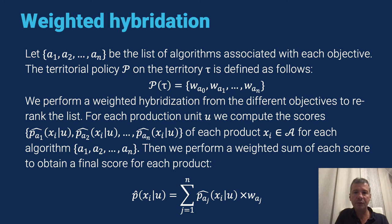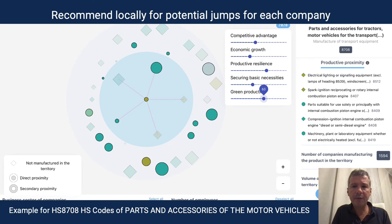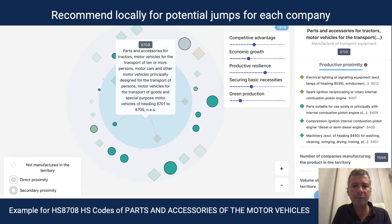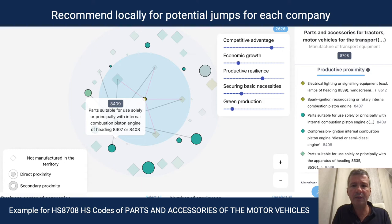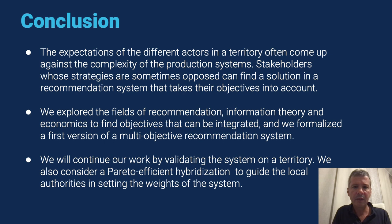We also promote environmentally friendly products using the ADEME list of ecological products. Our recommendation system weighs each objective before prioritizing the associated score, where weighting corresponds to the choice of territorial policy. We implemented an interface to weight objectives and dynamically visualize results — the center shows a product currently offered by the company, and around it we dynamically display recommended productions. In conclusion, stakeholders whose strategies are sometimes opposed can find a solution in a recommendation system that takes their objectives into account. Future work includes validating the system and considering efficient attribution methods to assist local authorities in setting system weights.